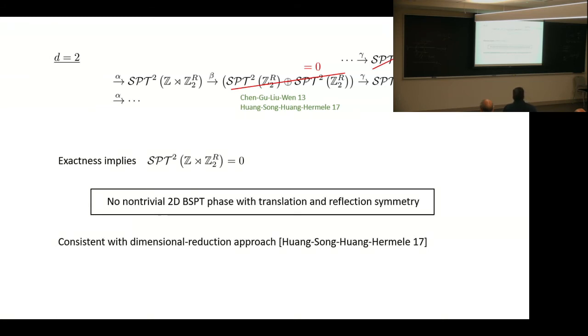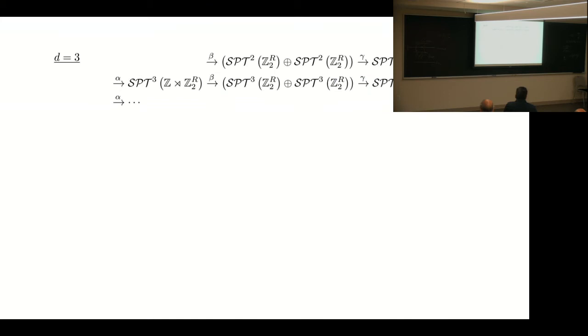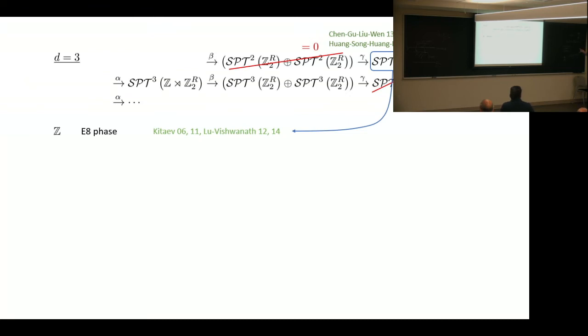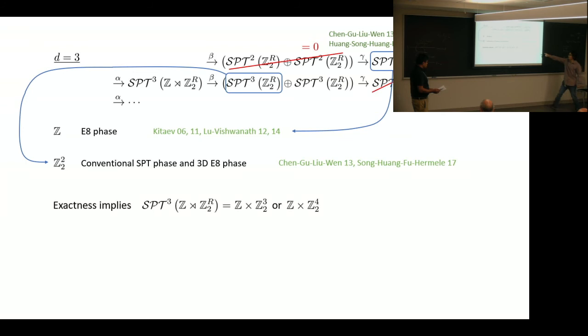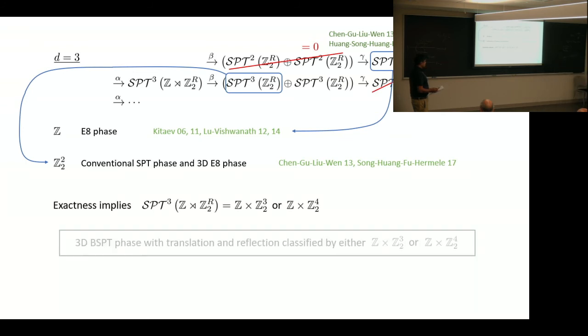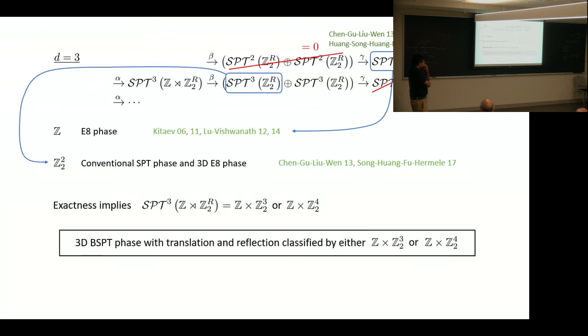Which is consistent with a general dimensional reduction argument. For 3D, we can do very similar things. We have two trivial terms. Here, 2D no symmetry, we have a Z classification, which is given by the E8 phase. 3D with reflection symmetry, we have a Z_2 squared classification, which consists of a conventional SPT phase and a 3D ℤ phase. By exactness, we get that the term in between can only be one of two possibilities. This is also consistent with the general dimensional reduction argument.